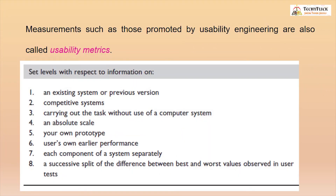This table provides a list of measurement criteria which can be used to determine the measuring method for a usability attribute and the possible ways to set the worst, best case, planned, and now level targets. Measurements such as those promoted by usability engineering are also called usability metrics.